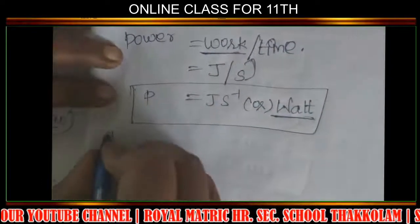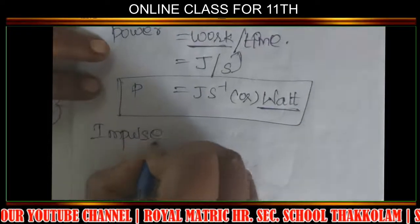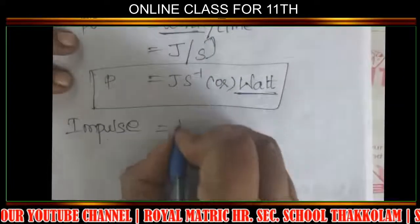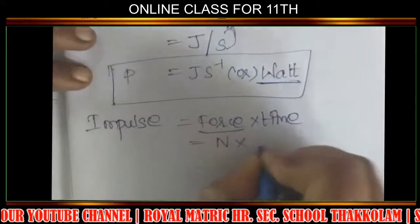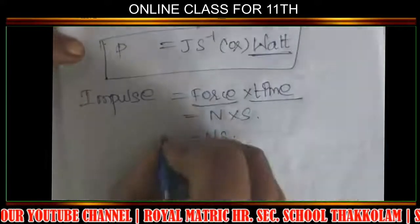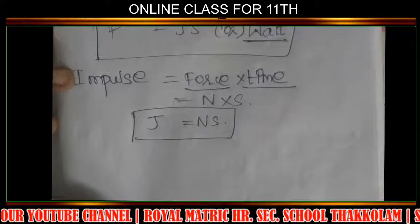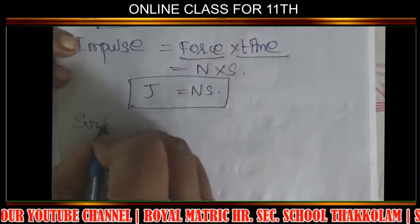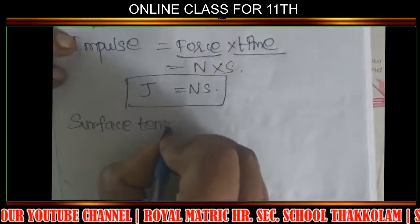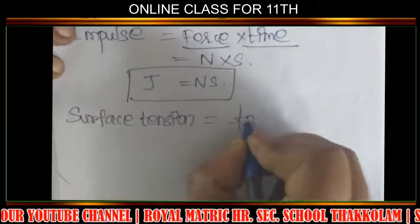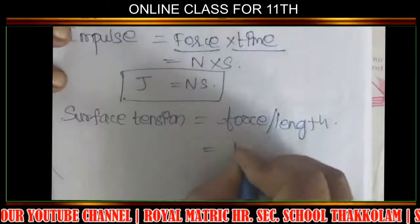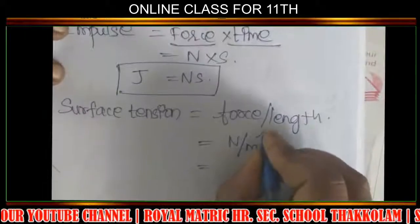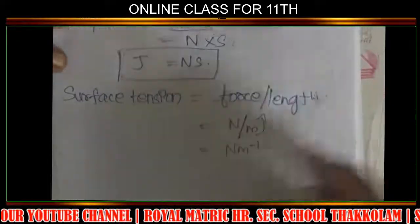Impulse, symbol J, formula is force into time. Force is Newton, time is second, so impulse SI unit is Newton-second (N·s). Surface tension formula is force divided by length. Force is Newton, length is meter, so surface tension SI unit is N m⁻¹.